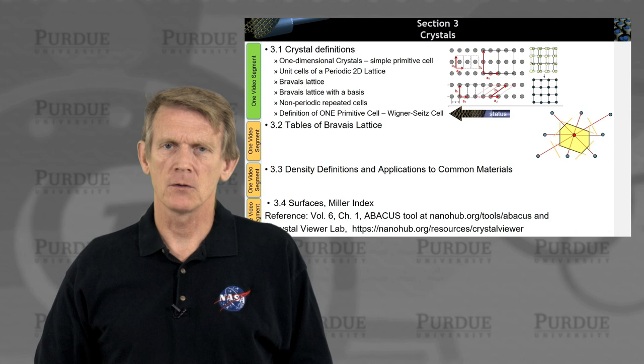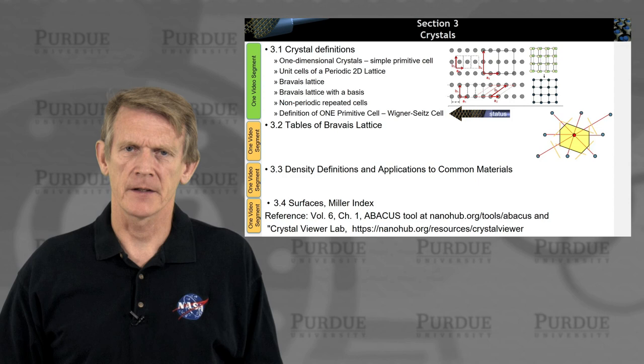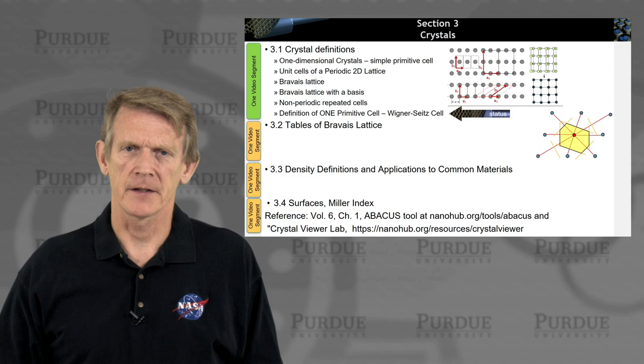All right. So we covered basic definitions of crystals, unit cells, repeated cells, and the construction of the Wigner-Seitz primitive cell. We'll talk next about how we can tabulate different crystal tables. So thank you.